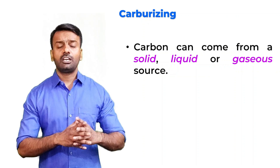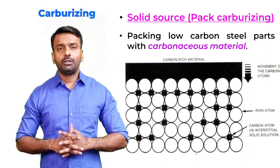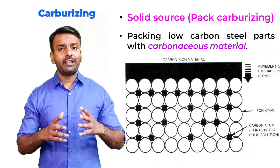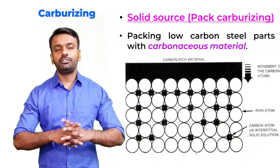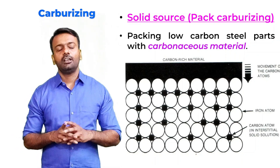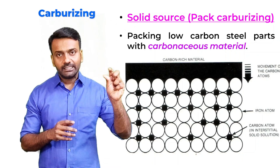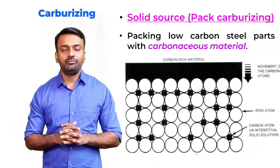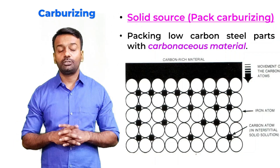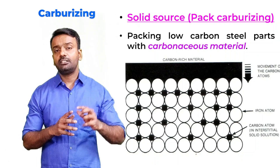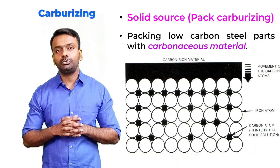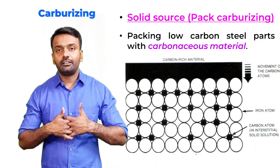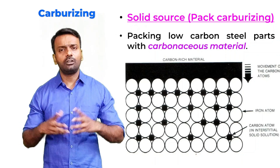During carburizing, the source of carbon can be solid, liquid, or gaseous. For solid carburizing, also called pack carburizing, low carbon steel parts are packed with carbonaceous material. Carbon infuses into the steel, going and sitting in the interstitial sites. When deformation is applied after carburizing, these carbon atoms at the interstitial sites act as a barrier and prevent plastic deformation. Because of their size, they lock the structure and create a barrier for dislocation movement.